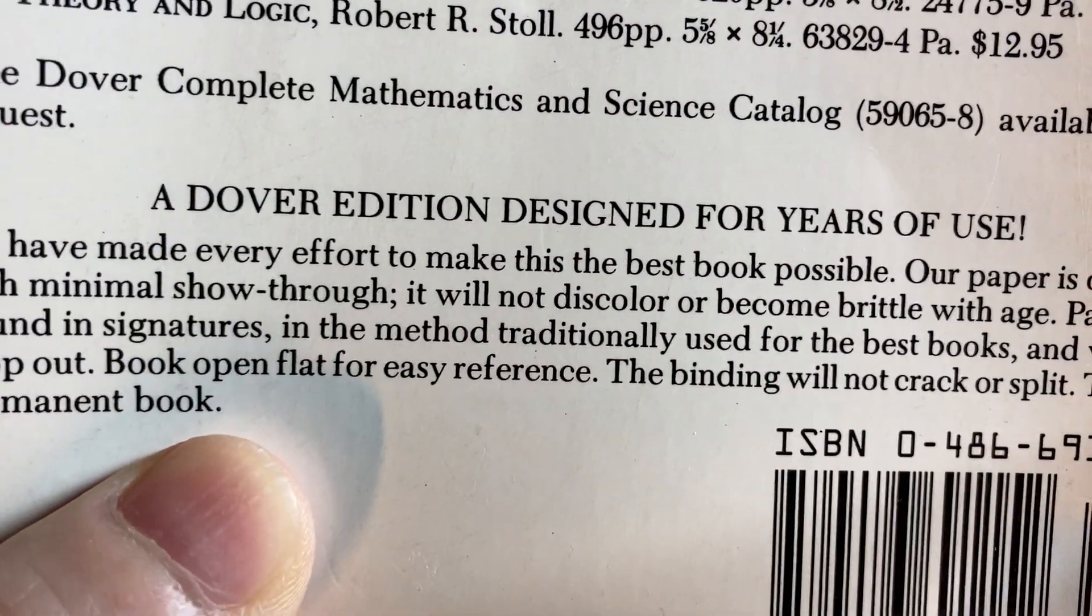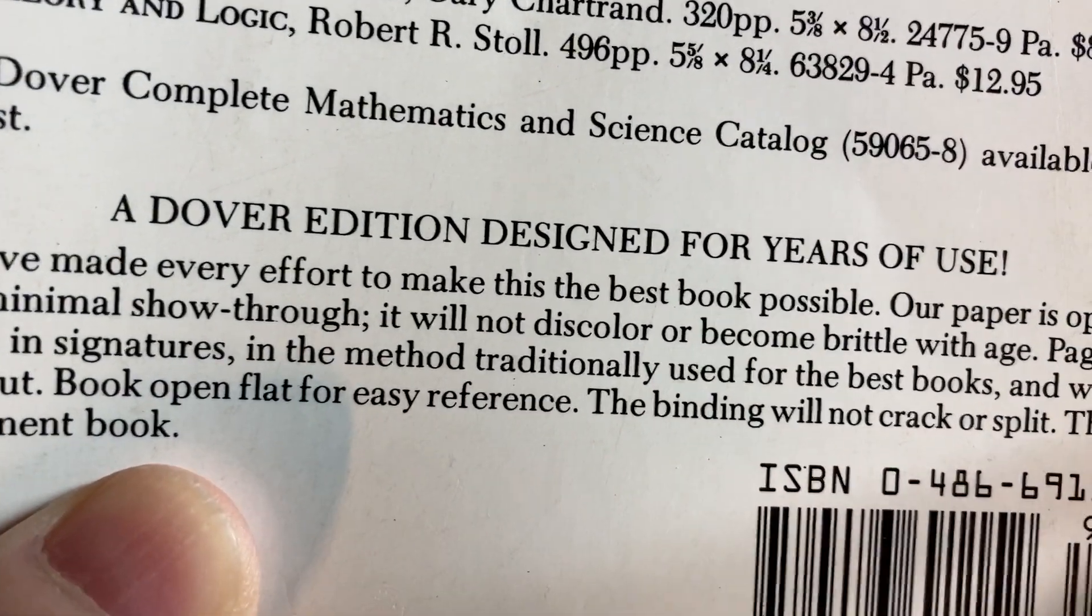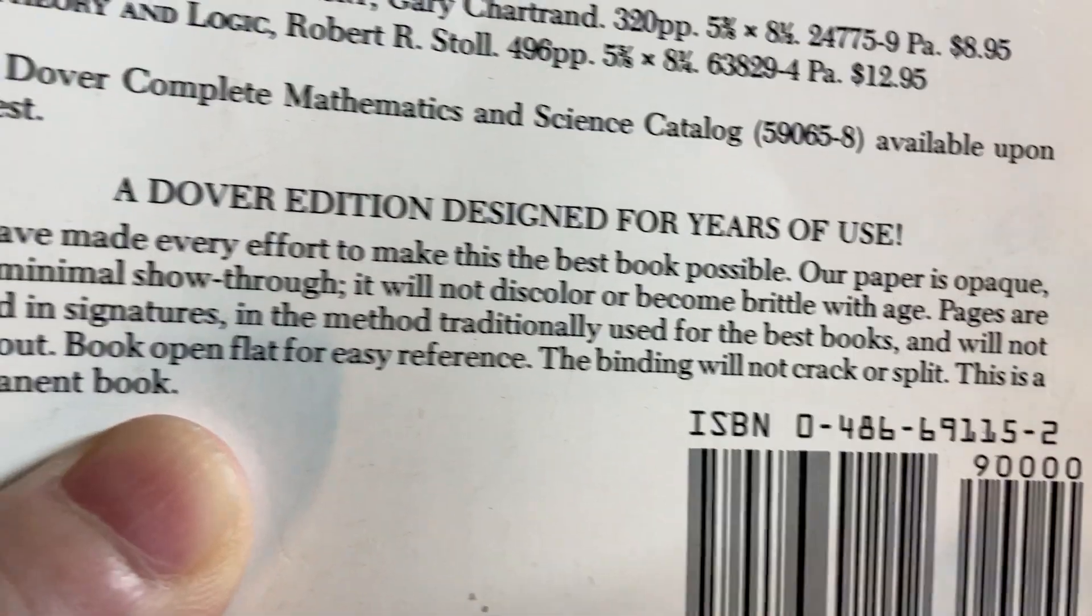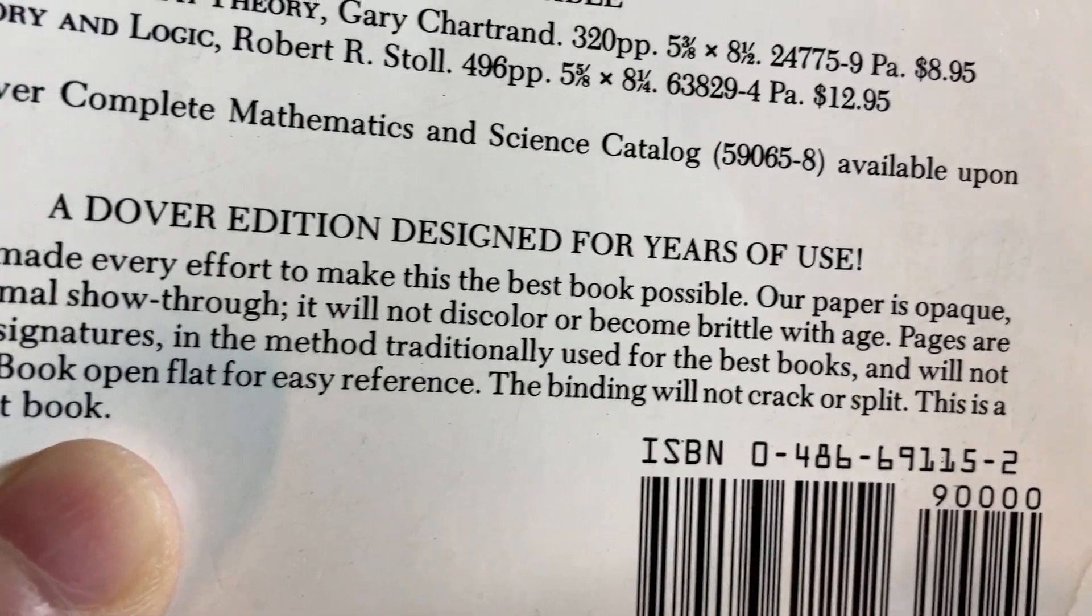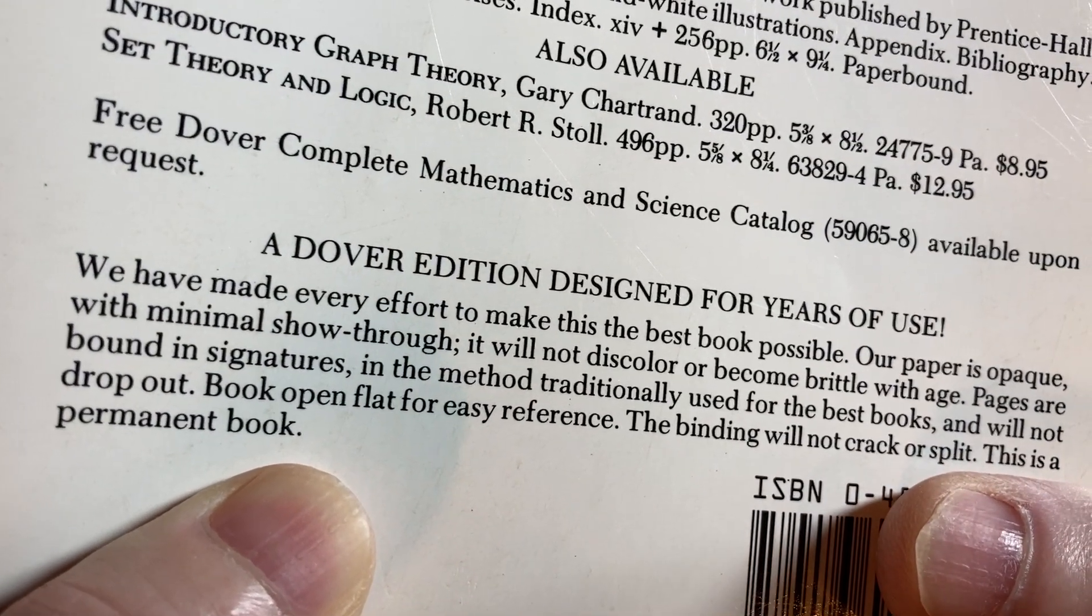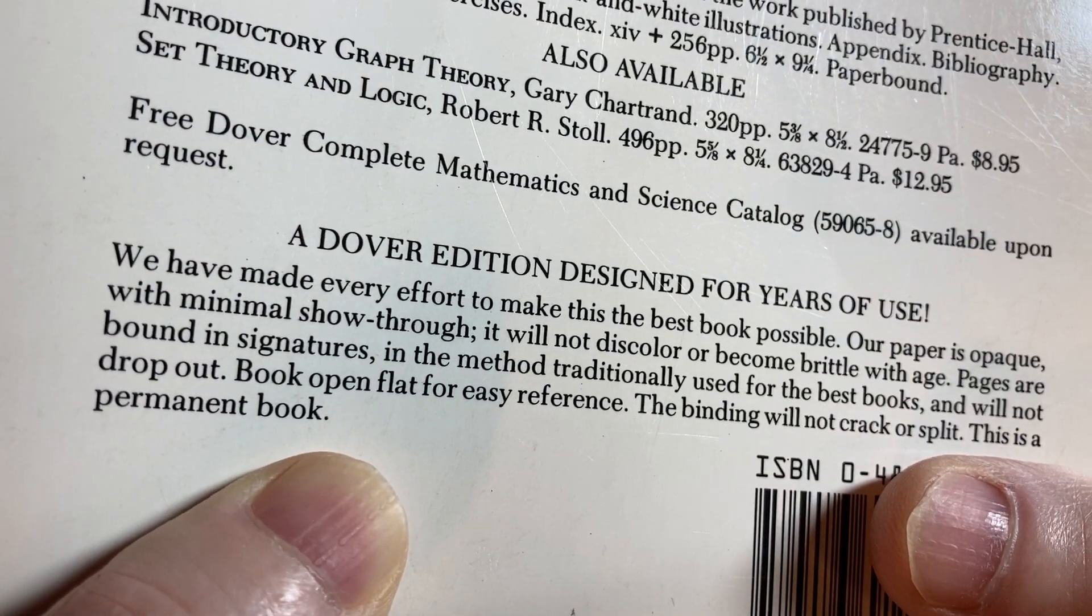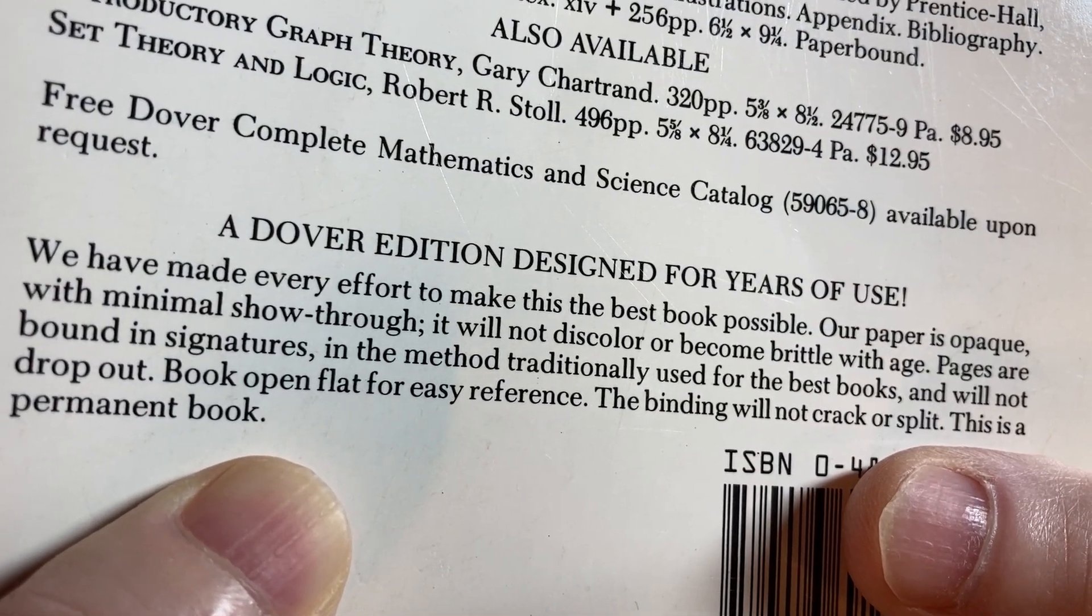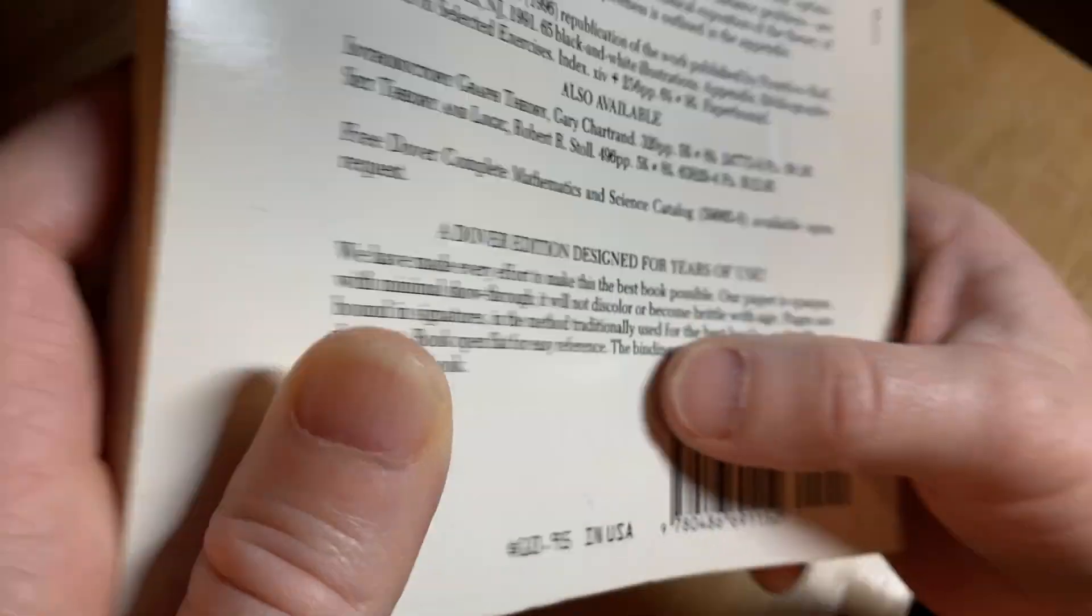A Dover edition designed for years of use. We have made every effort to make this the best possible book. Our paper is opaque with minimal show-through. It will not discolor or become brittle with age. Pages are bound in signatures in the method traditionally used for the best books and will not drop out. Book open flat for easy reference. The binding will not crack or split. This is a permanent book.